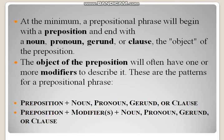At the minimum, a prepositional phrase will begin with the preposition and end with a noun, pronoun, gerund, or clause — these are the objects of the preposition. The object of the preposition can be a noun, a pronoun, a gerund, or a clause. The object of the preposition will often have one or more modifiers to describe it. These are the patterns for a prepositional phrase.